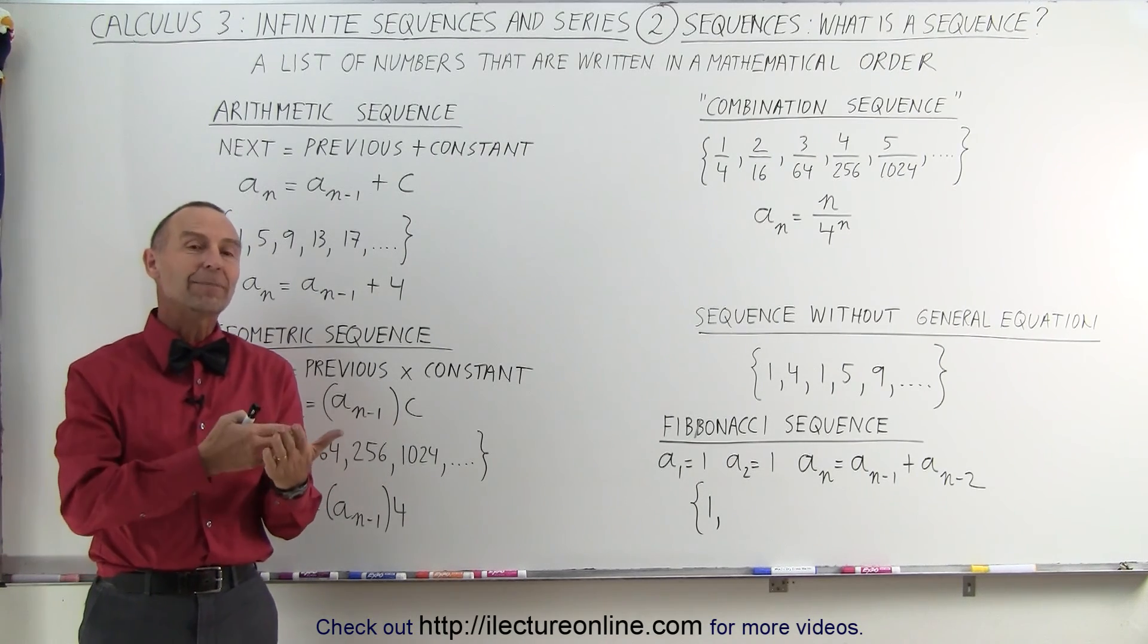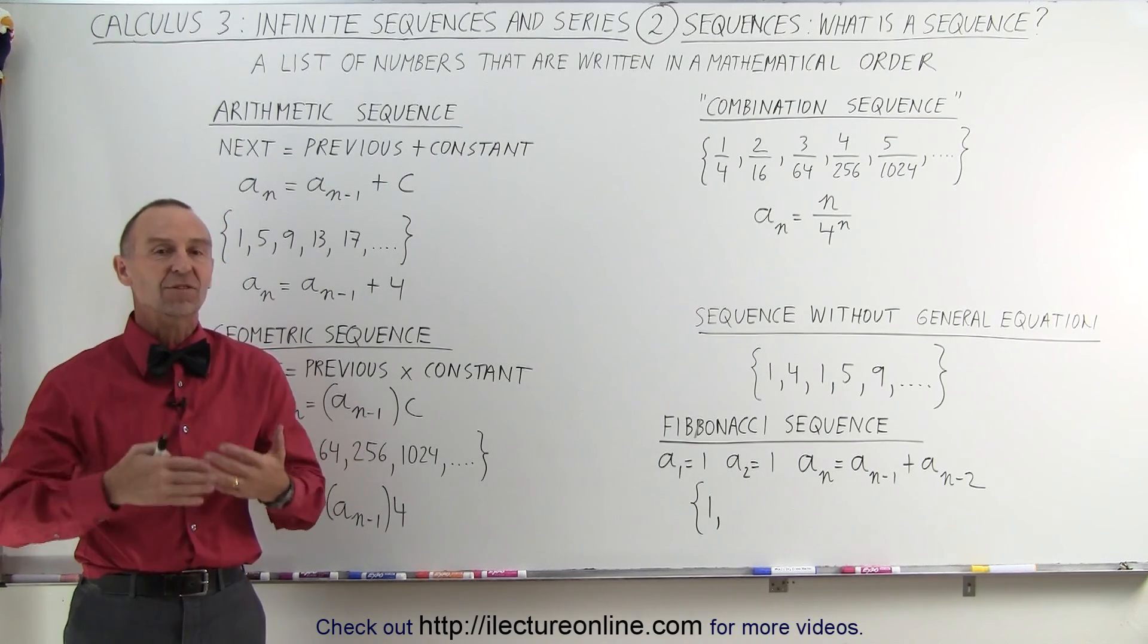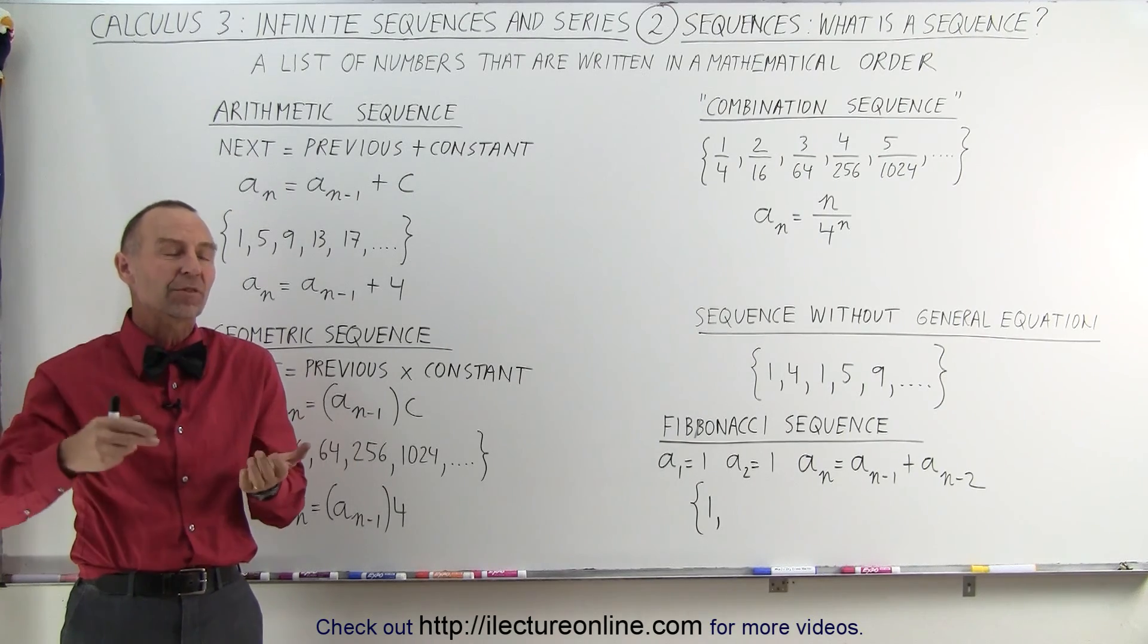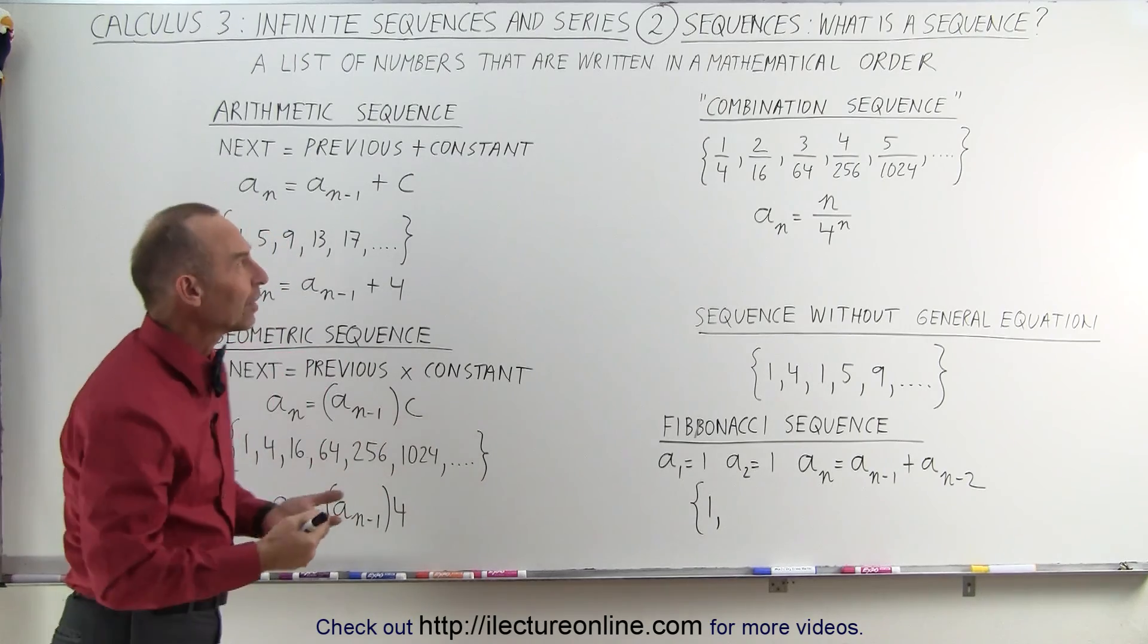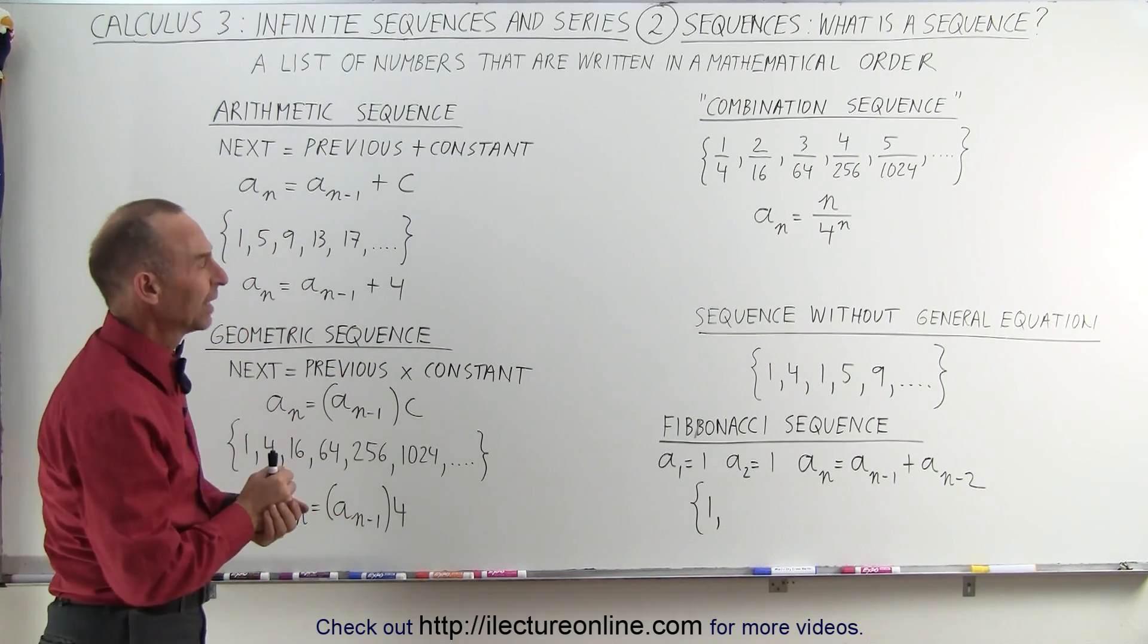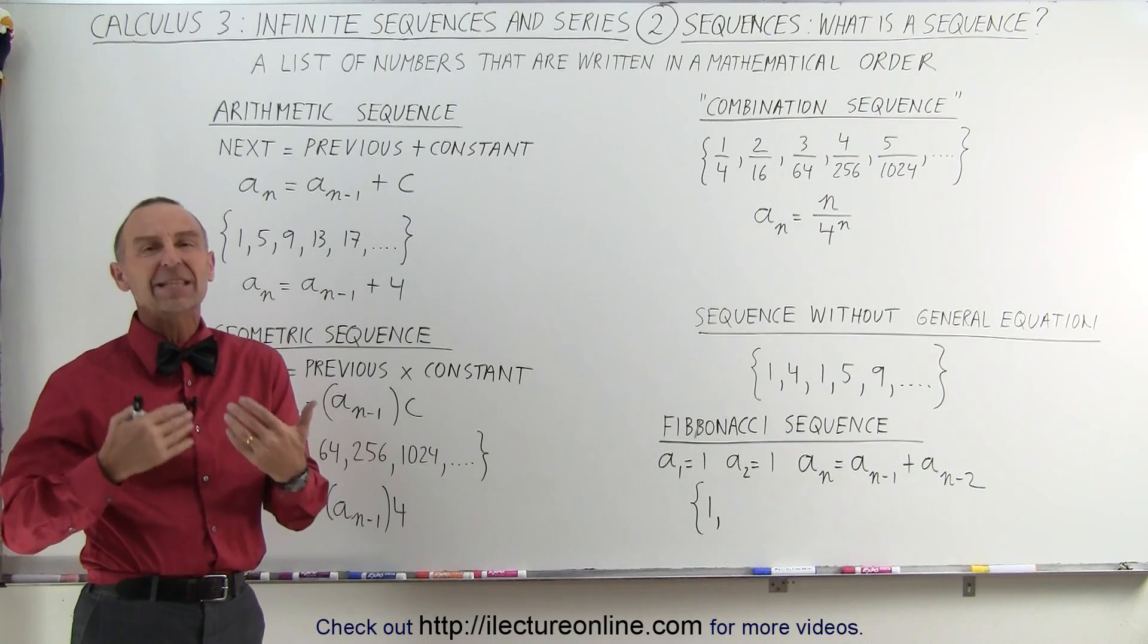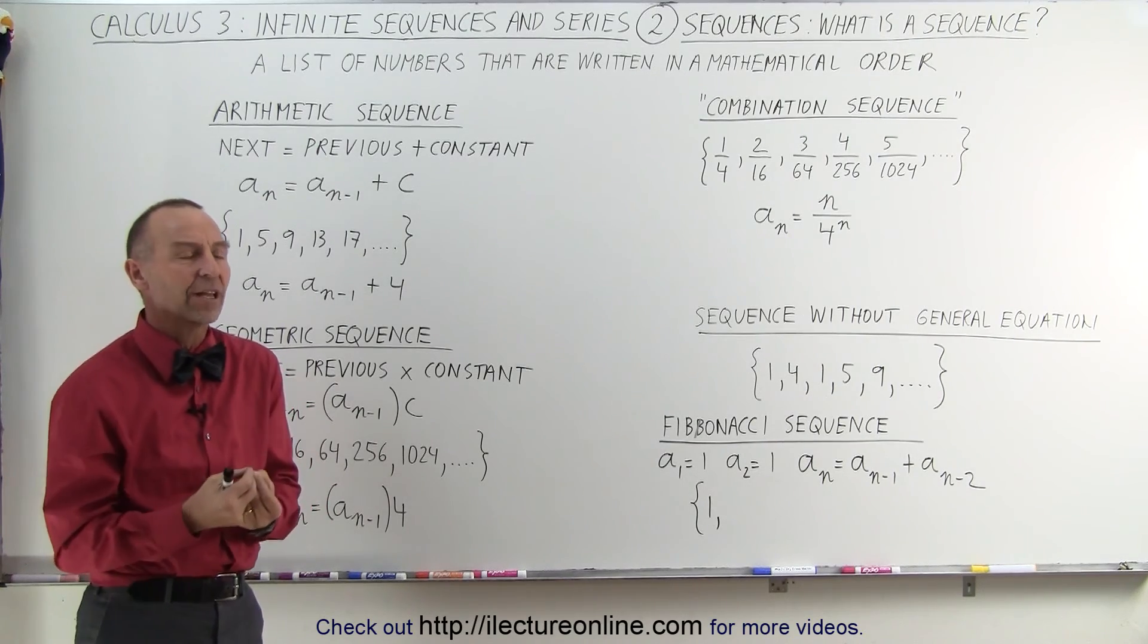A sequence is simply a set of numbers. It's not a sum or a difference or anything like that. It is simply a set of numbers that follow a certain mathematical standard or mathematical order. It's a very general description because there's so many different ways in which a sequence can be set up.